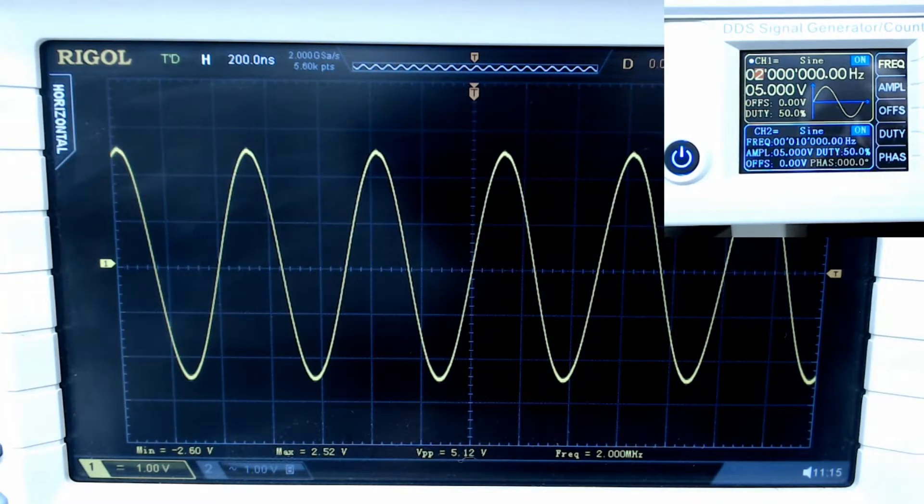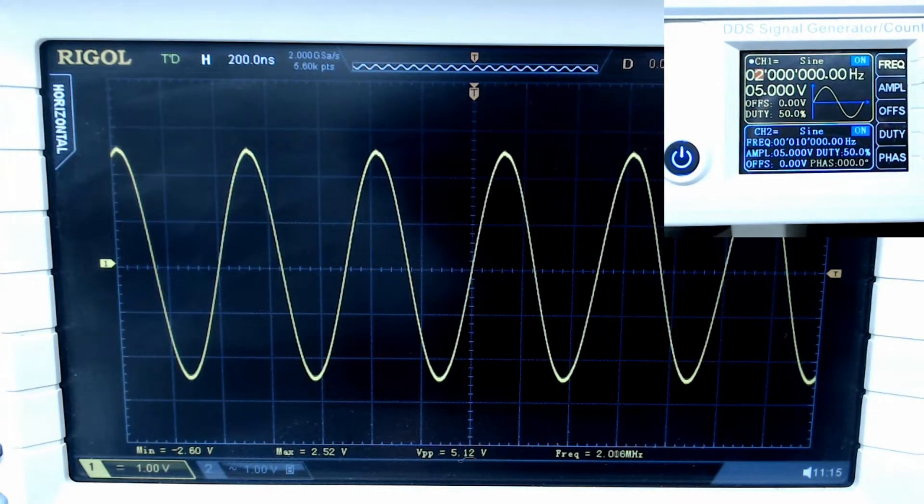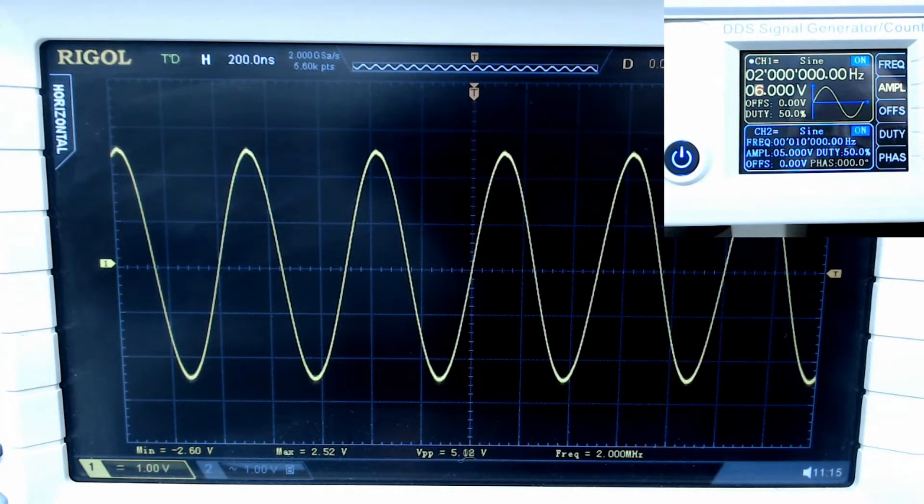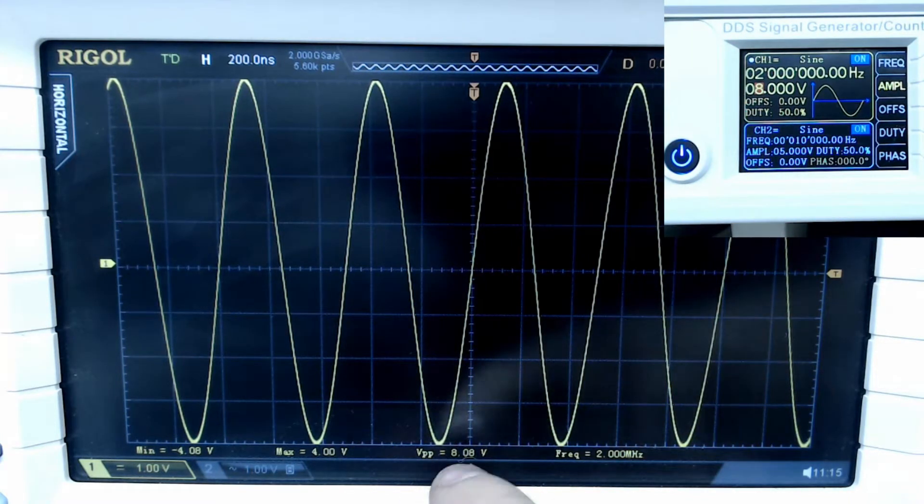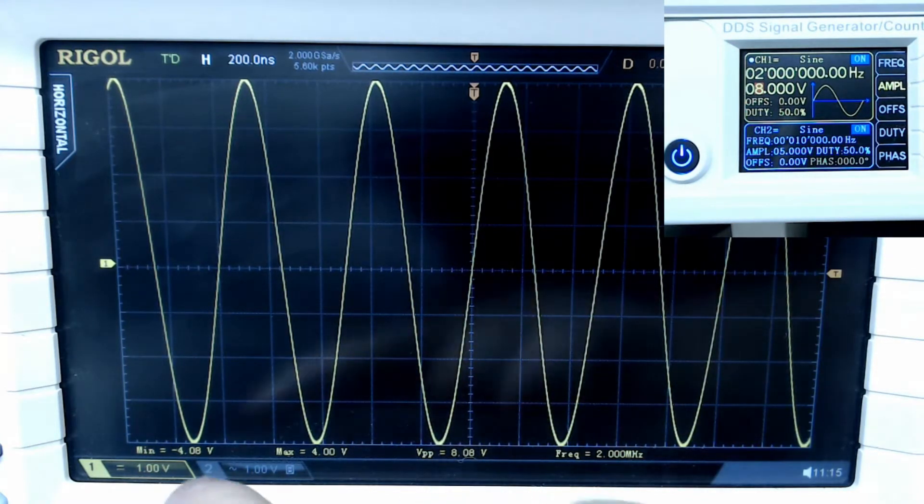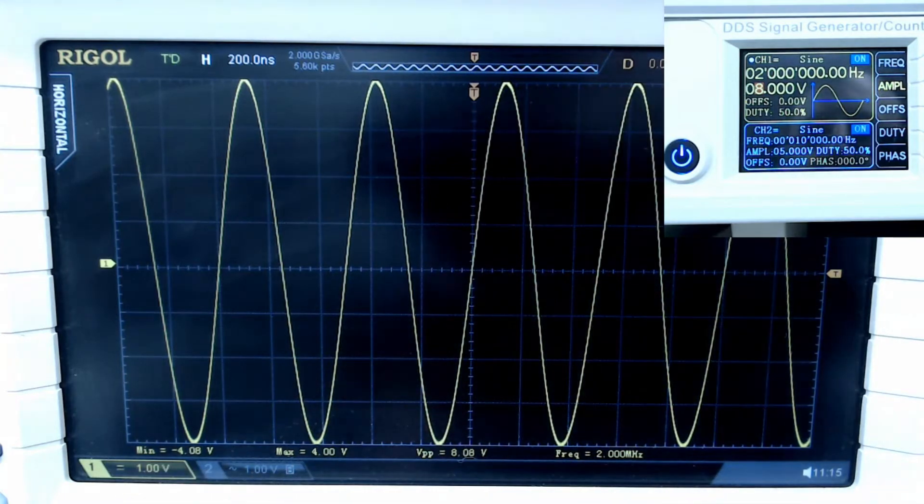If we go down and change the amplitude, I'm going to press the amplitude button, go over here, change it to say eight volts. You can see here we're eight volts peak to peak, and of course negative four volts and positive four volts on the sine wave.